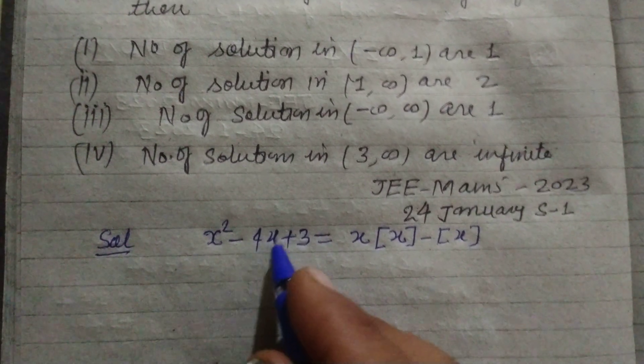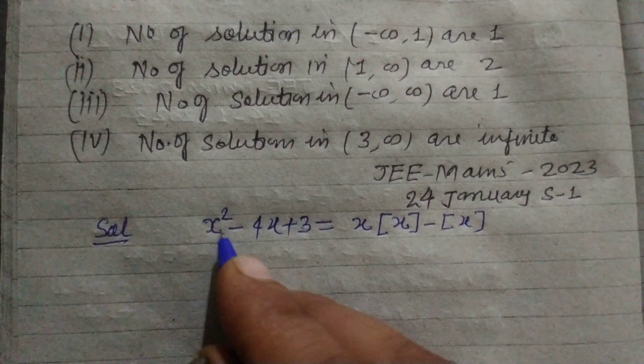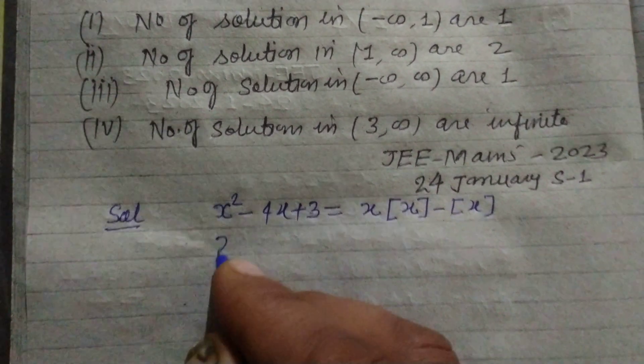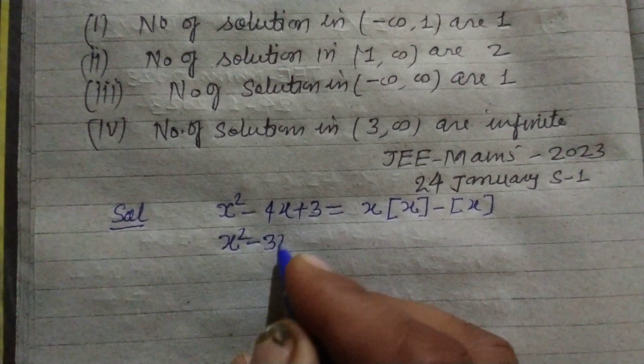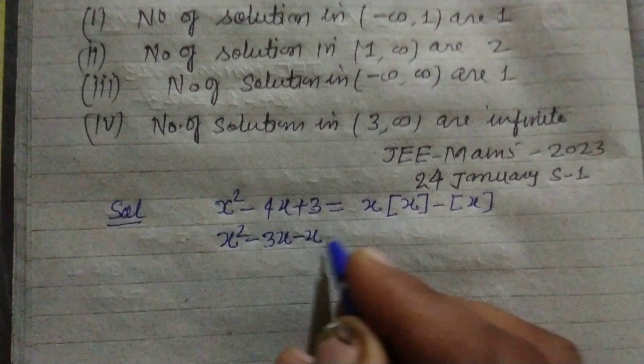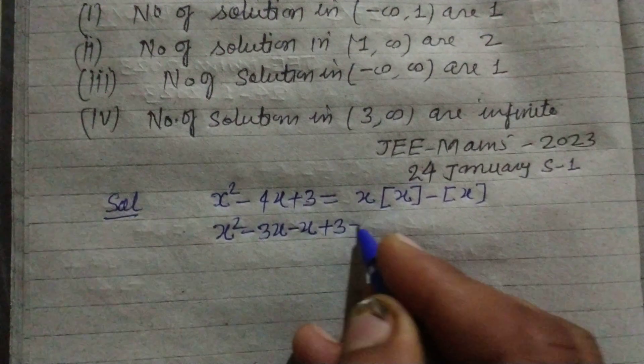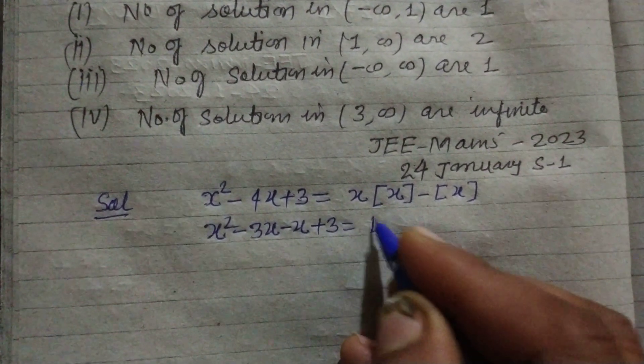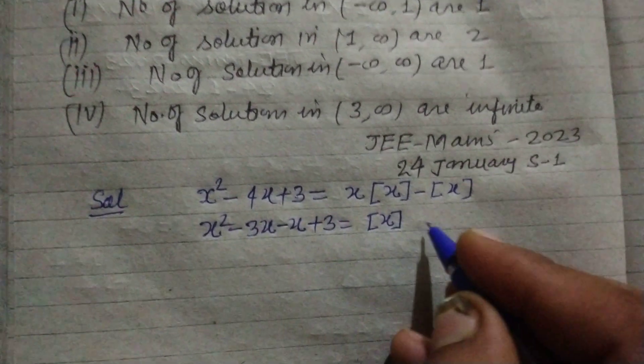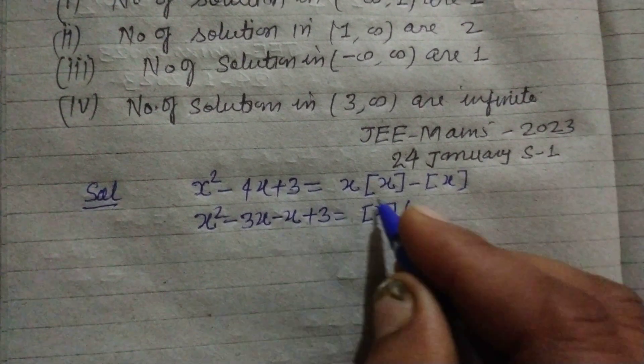Now we factorize this. So x² - 3x - x + 3 equals [x](x - 1) taken as common.